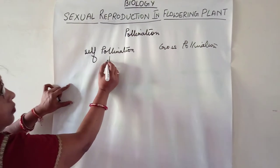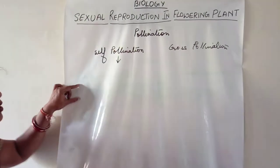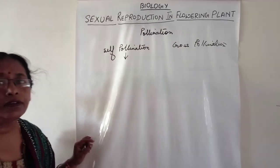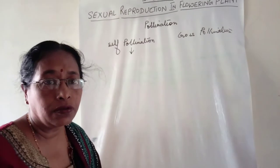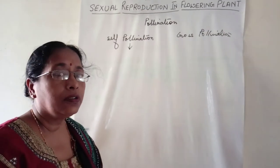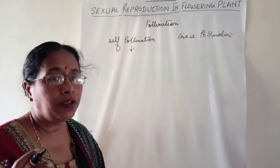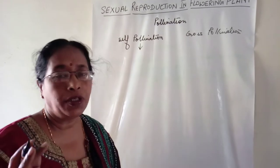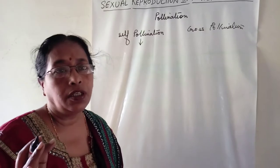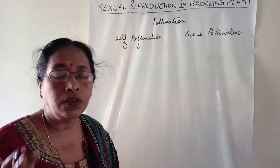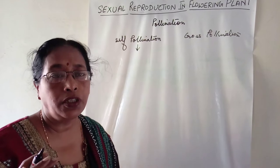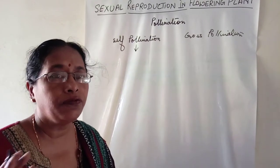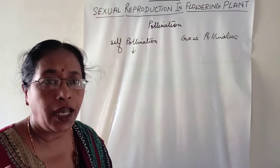The only disadvantage of self-pollination is inbreeding depression. We shall discuss inbreeding depression later on. Inbreeding depression occurs because of continued self-pollination — the seeds lose their vitality and vigor.